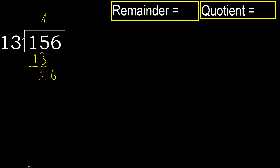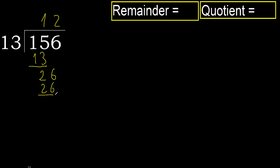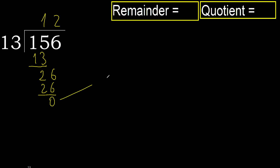Next, bring down 6, making 26. 13 multiplied by 2 is 26, which is not greater. Subtract: 26 minus 26 equals 0. There is no next number, therefore finish.